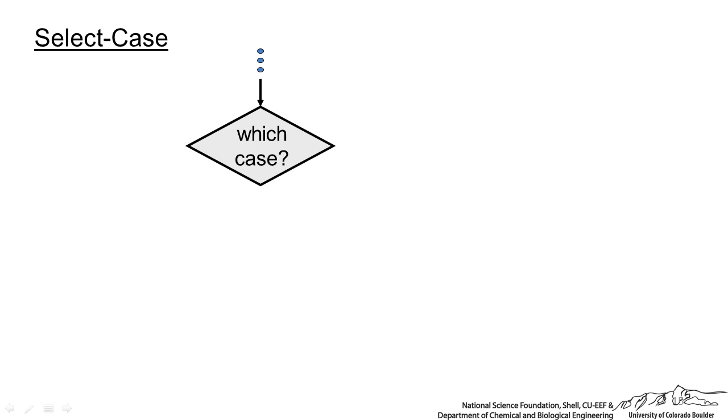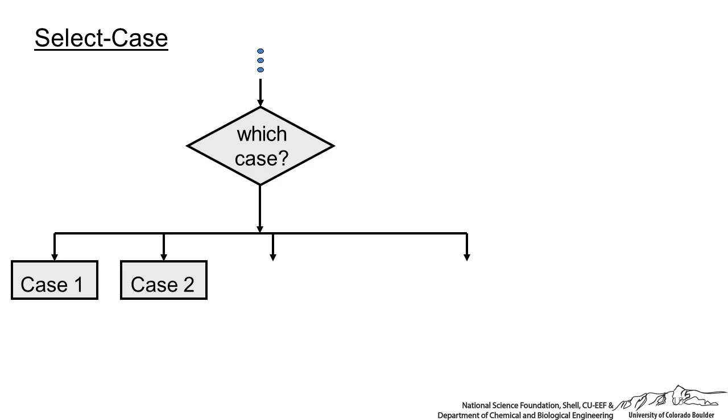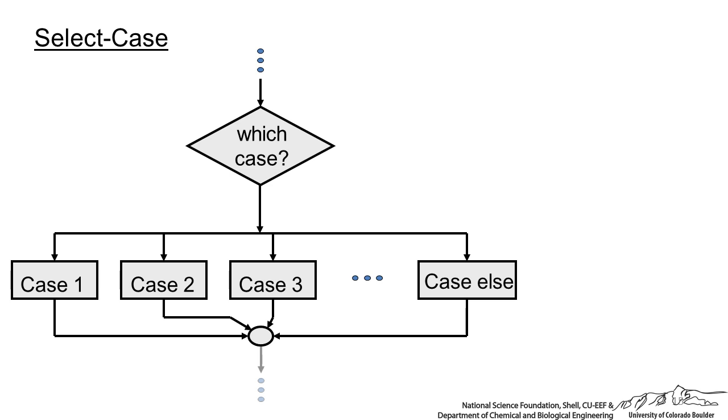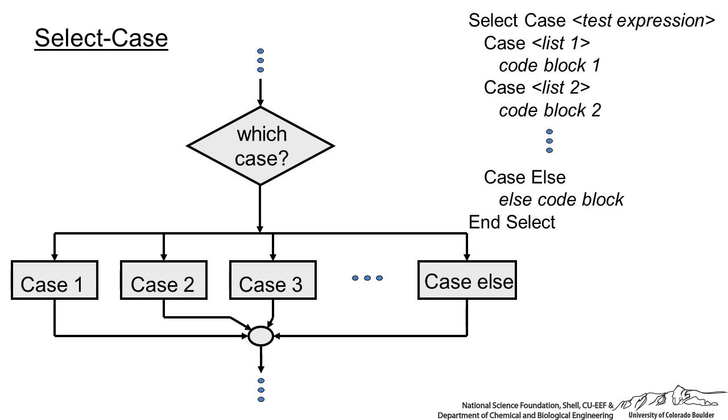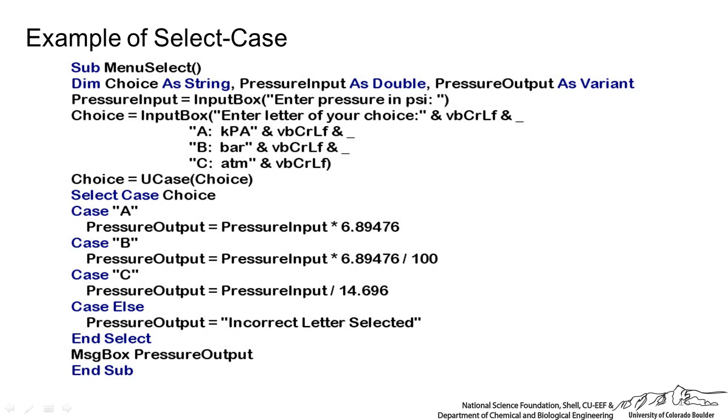Next we have select case. Select case is pretty direct, it's just sort of asking a user for a case. You know, we can have case one, two, three, a bunch of them up to a case else. A case else is actually similar to the else, where it's a catch all, and if nothing else, then this is what we're going to do. And then we can move along. The code for this starts with select case on some sort of test expression, and we have case one, case two, and so on, and we have case else.